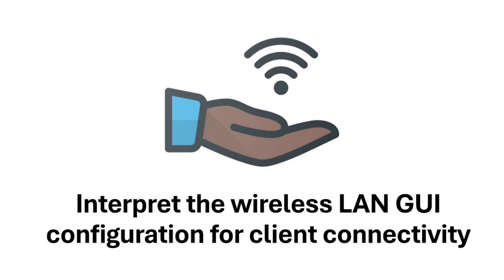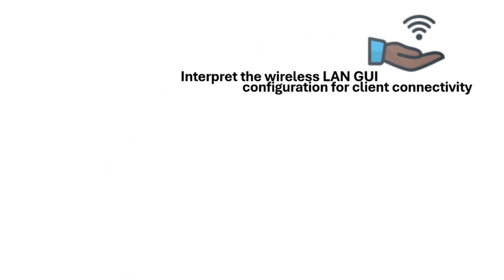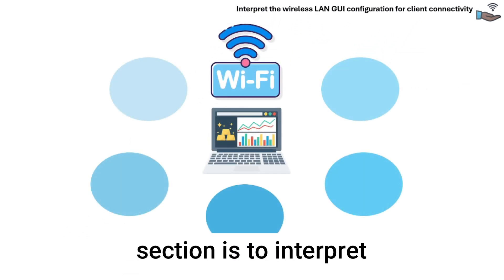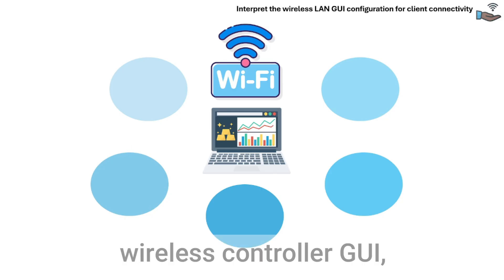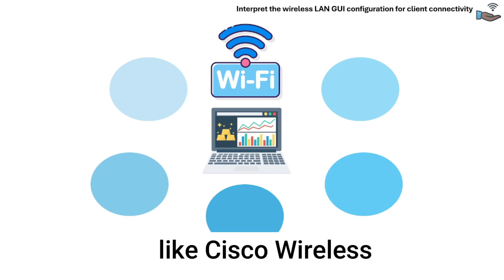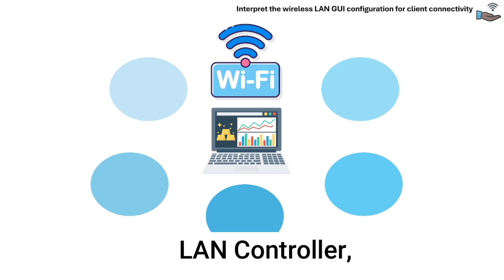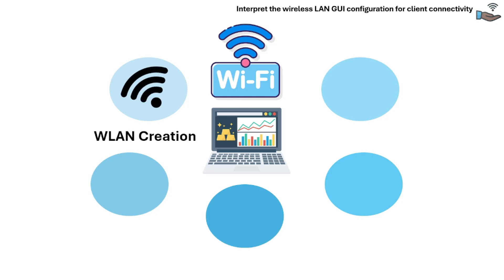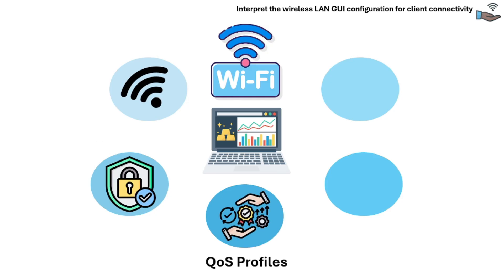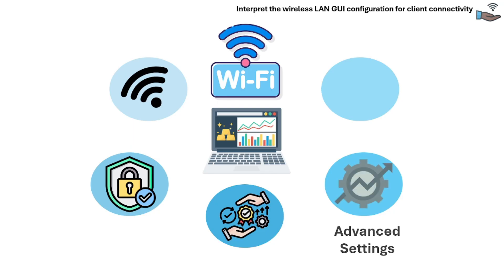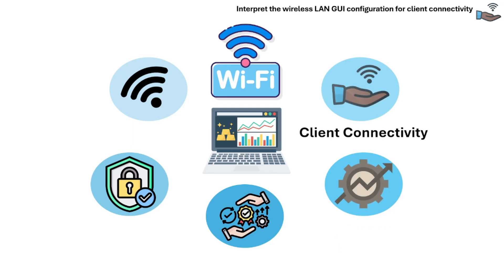Section 2.9 is about wireless LAN GUI configuration for client connectivity. The objective is to interpret and verify wireless LAN configuration in a wireless controller GUI like Cisco Wireless LAN Controller, focusing on wireless LAN creation, security settings, quality of service profiles, advanced settings, and client connectivity behavior.